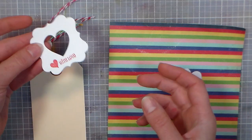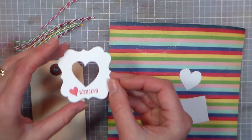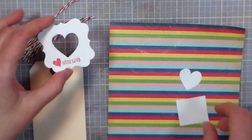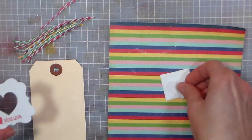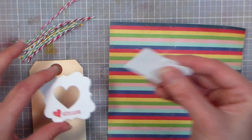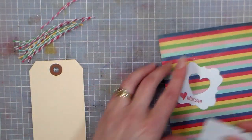I didn't have a heart punch, so I freehand cut a heart out of paper, then stamped 'with love' on it. Here's the piece I cut out, and then I cut a little square that was just a bit bigger than that heart so I'd have a place to add adhesive.